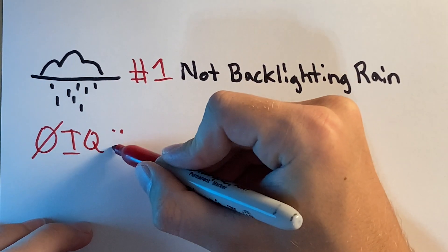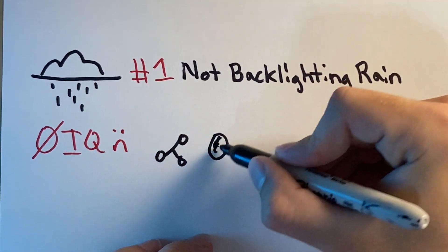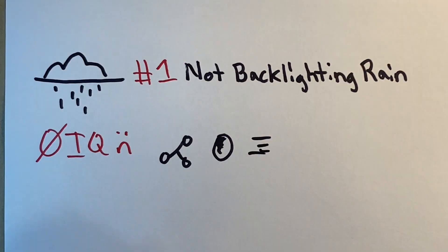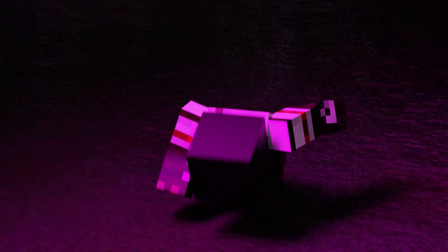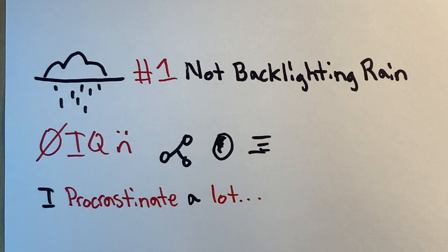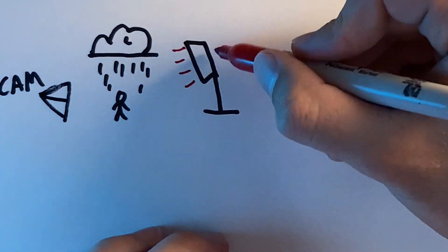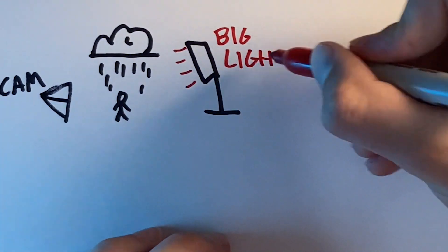All the tutorials I watched said to add a particle system, add a material, add some motion blur, and you're good. But that didn't work for me — it just didn't show up in the final render. I'd also waited until the last minute, so it didn't end up looking great. Make sure you get a big light to backlight that rain so it shows up in your renders.